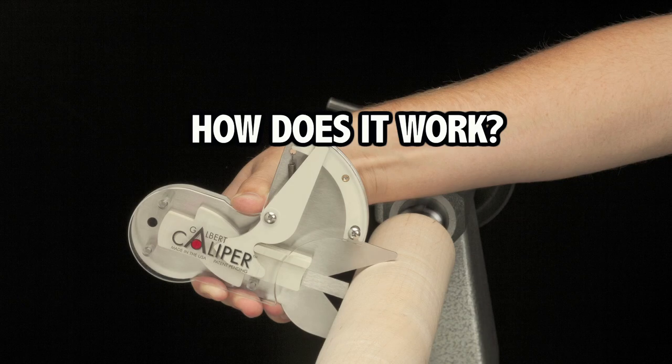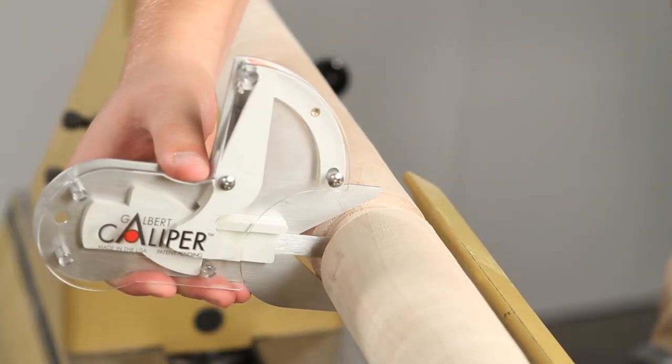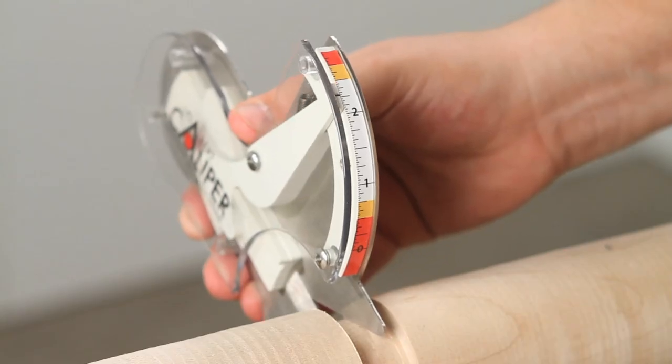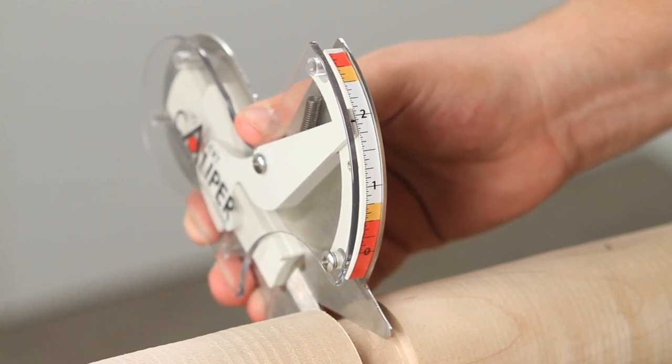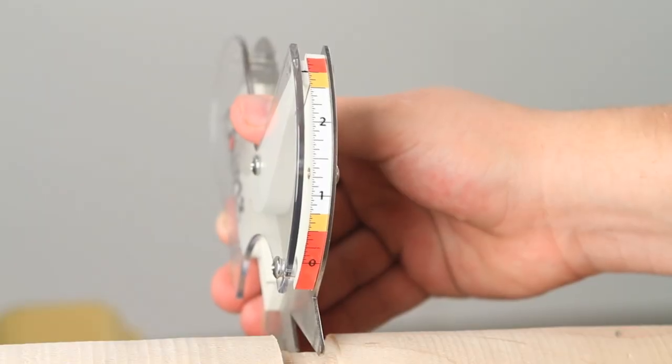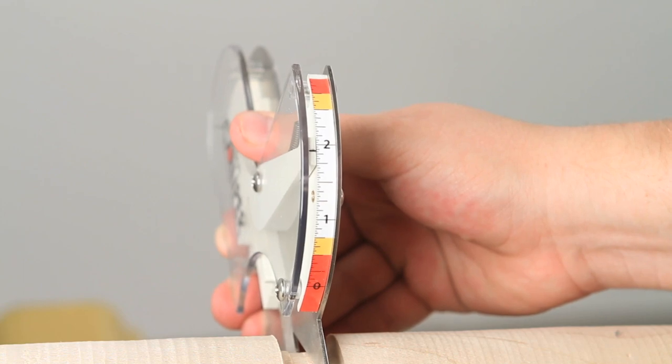How does it work? Pressing the caliper against the workpiece presses the plunger inward until the jaws of the caliper engage the workpiece. The diameter of the work being measured is then transferred to the easy to read scale.